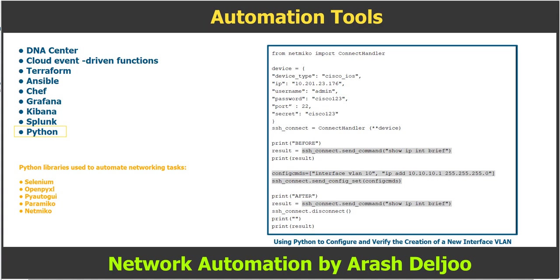The following are some examples of Python libraries used to automate networking tasks: Selenium, OpenPyXL, PyAutoGUI, Paramiko, and Netmiko. The main advantage of Python is that it can work with any device type, any platform, any vendor, and any system with any version.